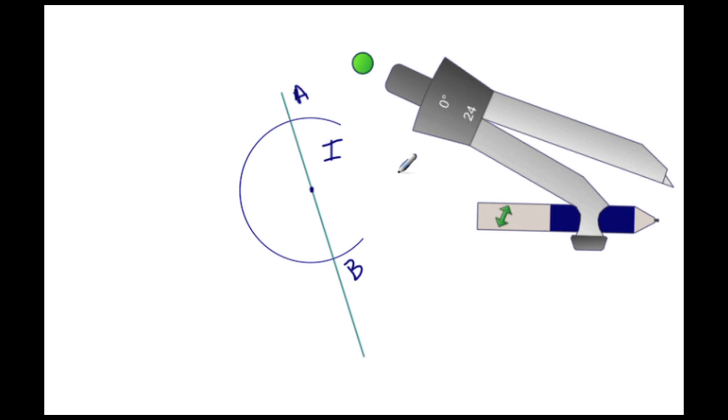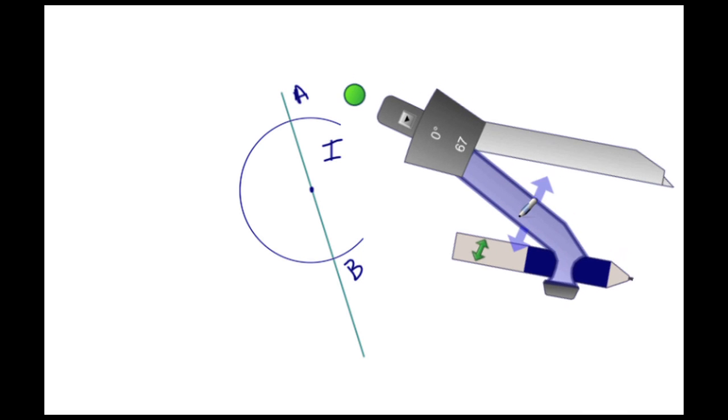That midpoint here would be AI or IB, so the radius has to be longer than that. So let's set that again at an arbitrary radius, but larger than that.